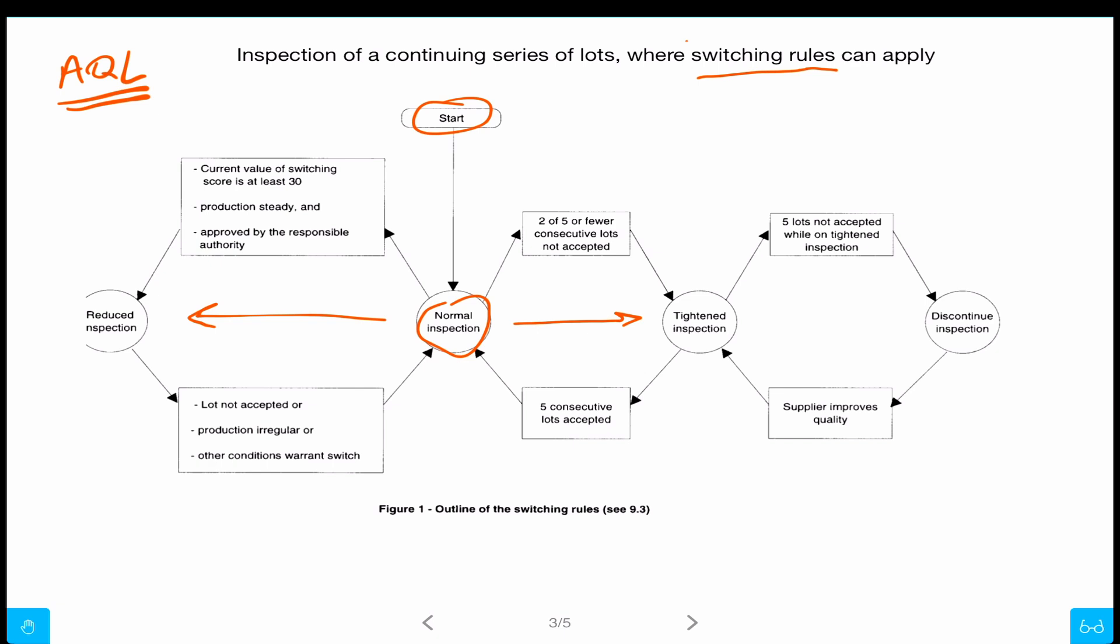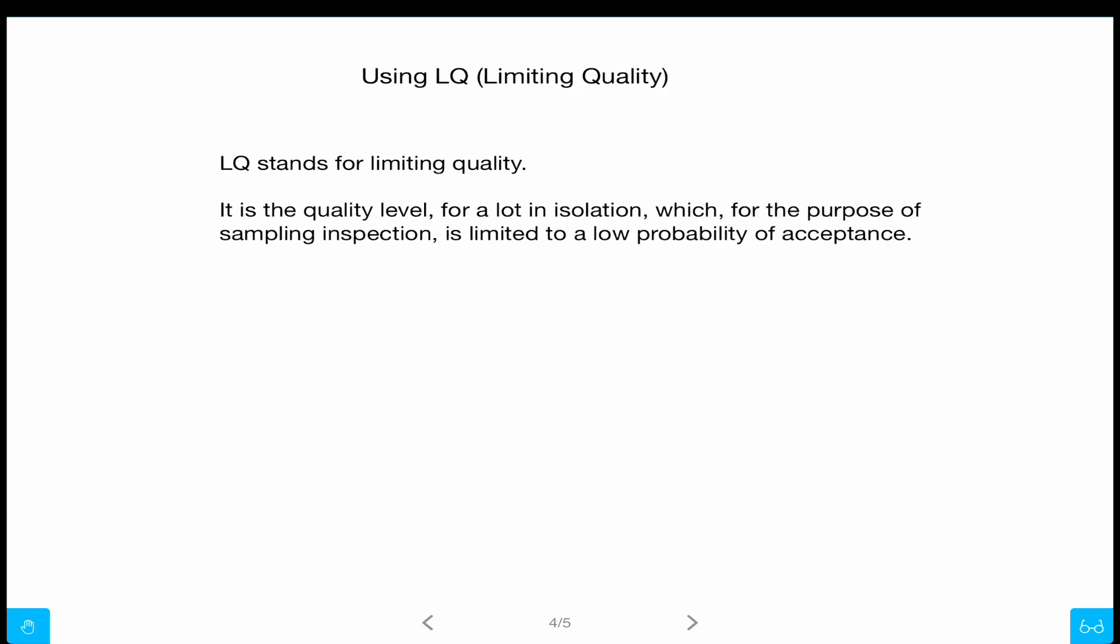Which again is an average, an intended average over a series of batches. One batch from time to time is going to be not too good, but it's still going to be accepted. Now what about a lot in isolation? You buy a lot and you cannot make any assumptions, you don't have any history. You just need to confirm: is this batch good or bad, only based on its own information? That's where you use limiting quality, LQ.